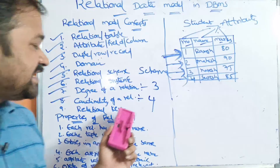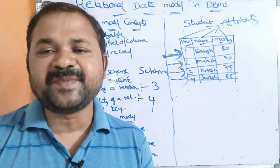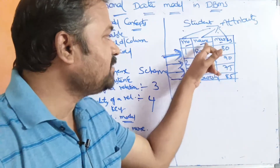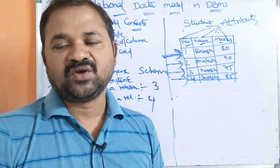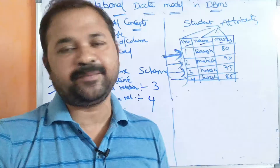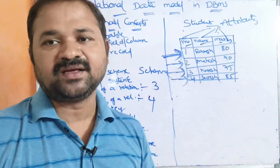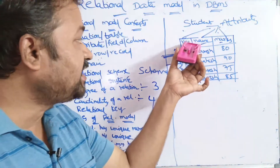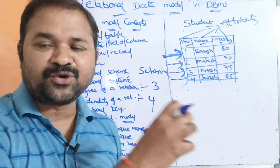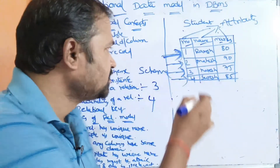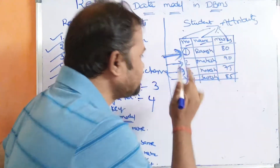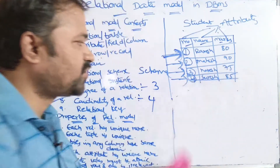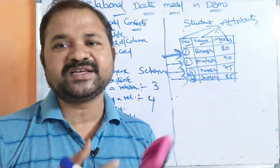The next terminology is relational key, or key. A key is mainly useful in order to uniquely identify a tuple. Can we make name as a key? No — because several students may have the same name. Can we make marks as a key? No — because several students may secure the same marks. But we can make roll number the key, because by using roll number we can uniquely identify each row. Mainly we use primary key.